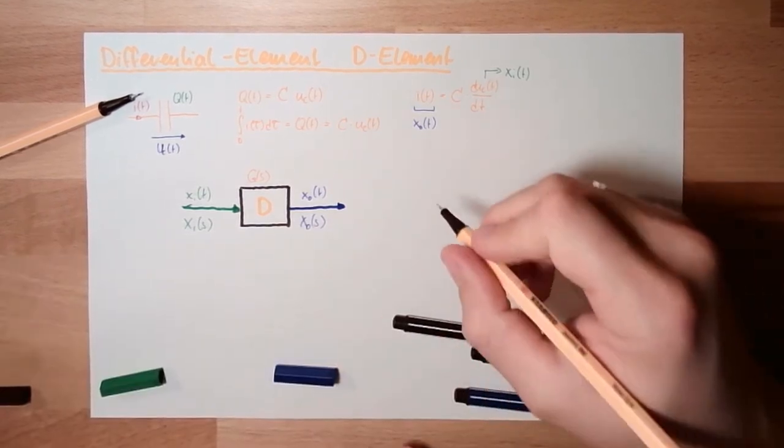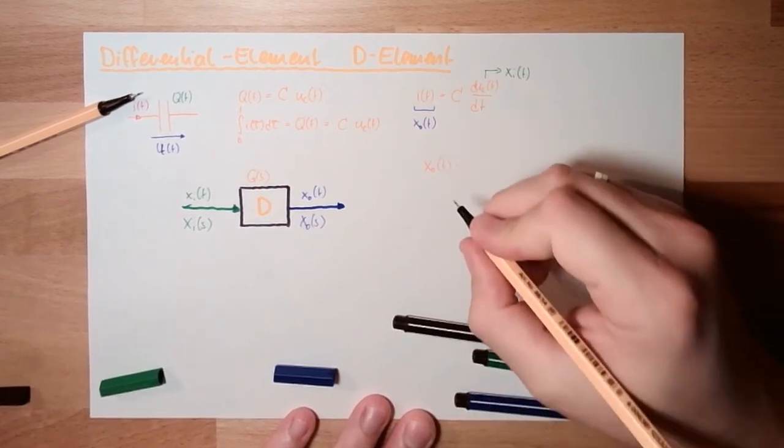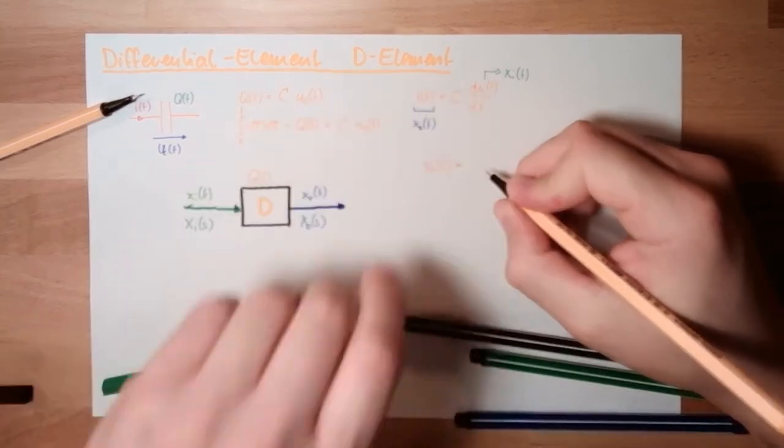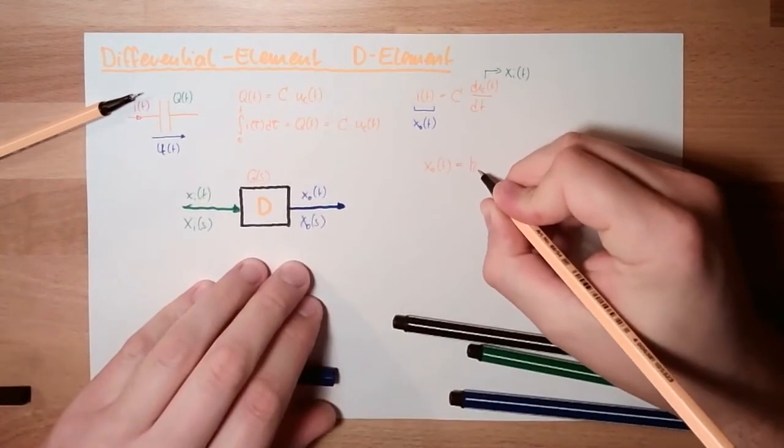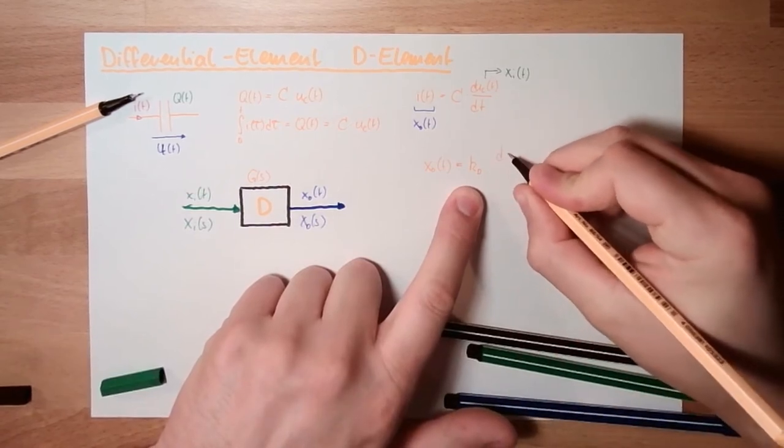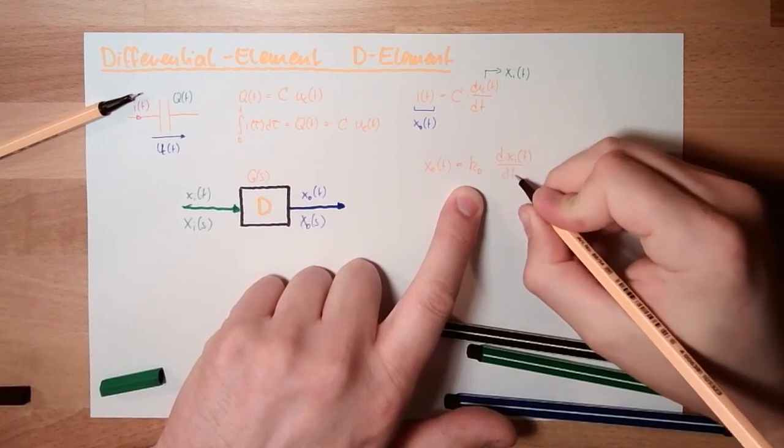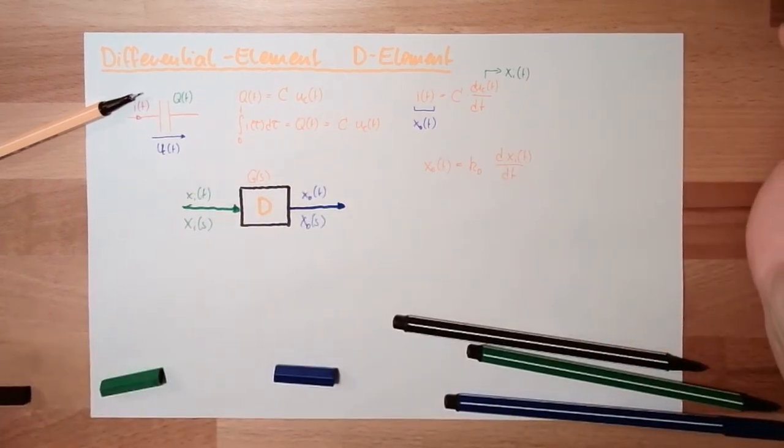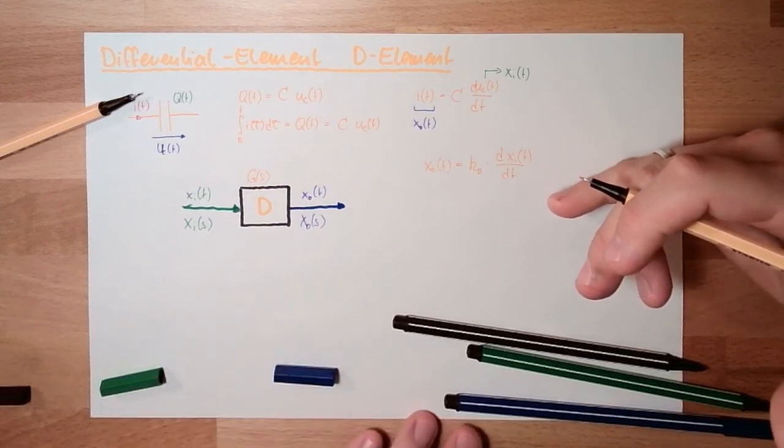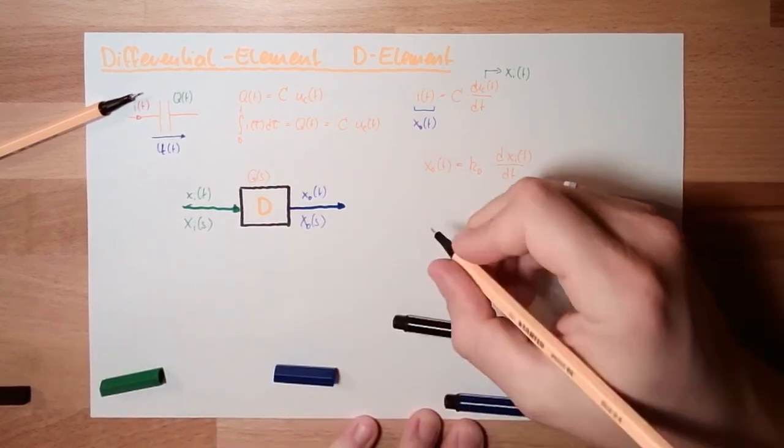So basically, what is written here is XO from T equals some constant factor KD multiplied by the change rate of the input. OK, that's the formula in time area.